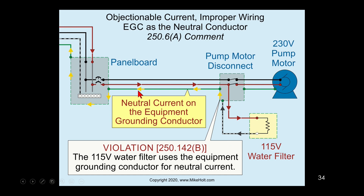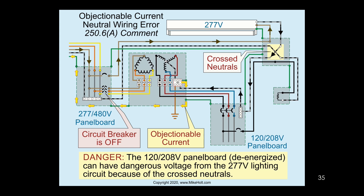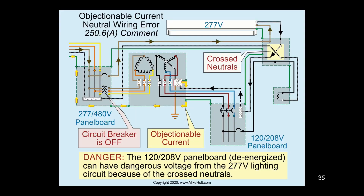Back to answering the question — making this connection causes objectionable current to travel on the equipment grounding conductor. We can put an amp meter on there and actually measure it. Now here's a scenario about as complicated as you could possibly get — this is showing you a scenario where one of our video team members' brother-in-law got killed. This shows three phases — brown, orange, and yellow — coming into a panel board with 277/480 volts coming in.